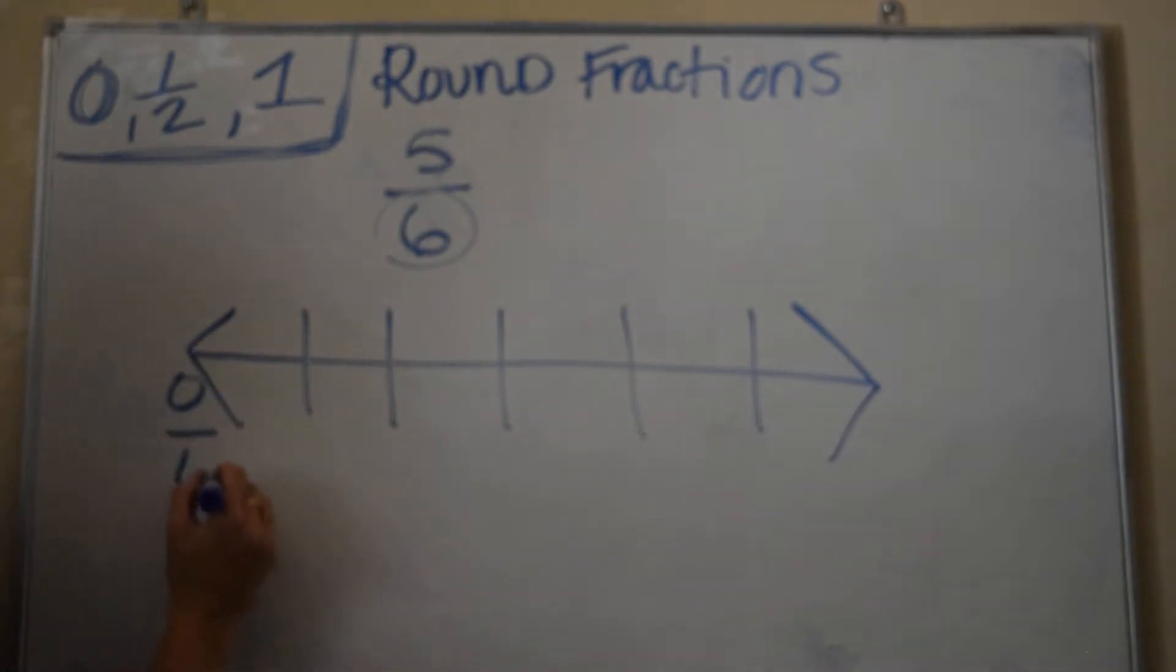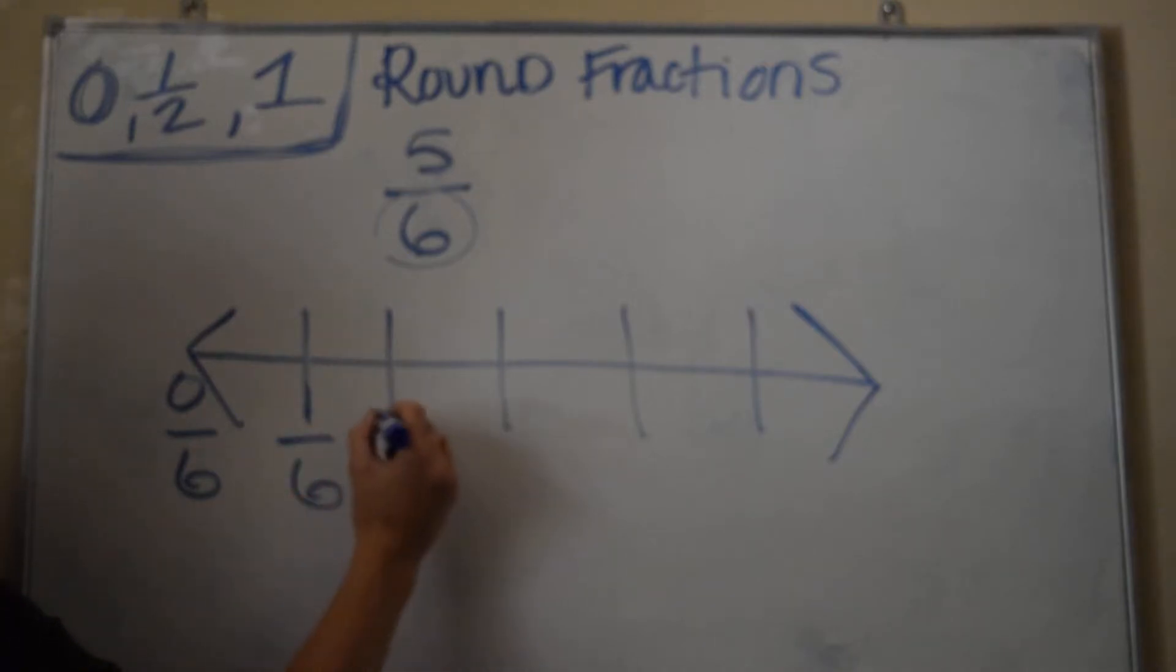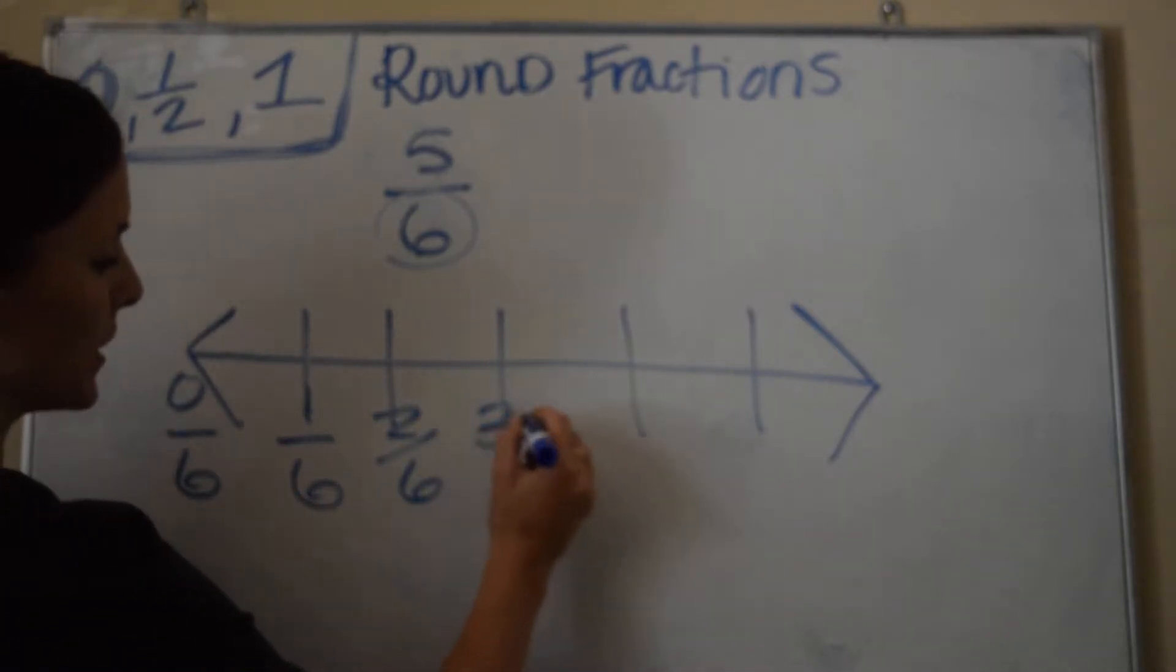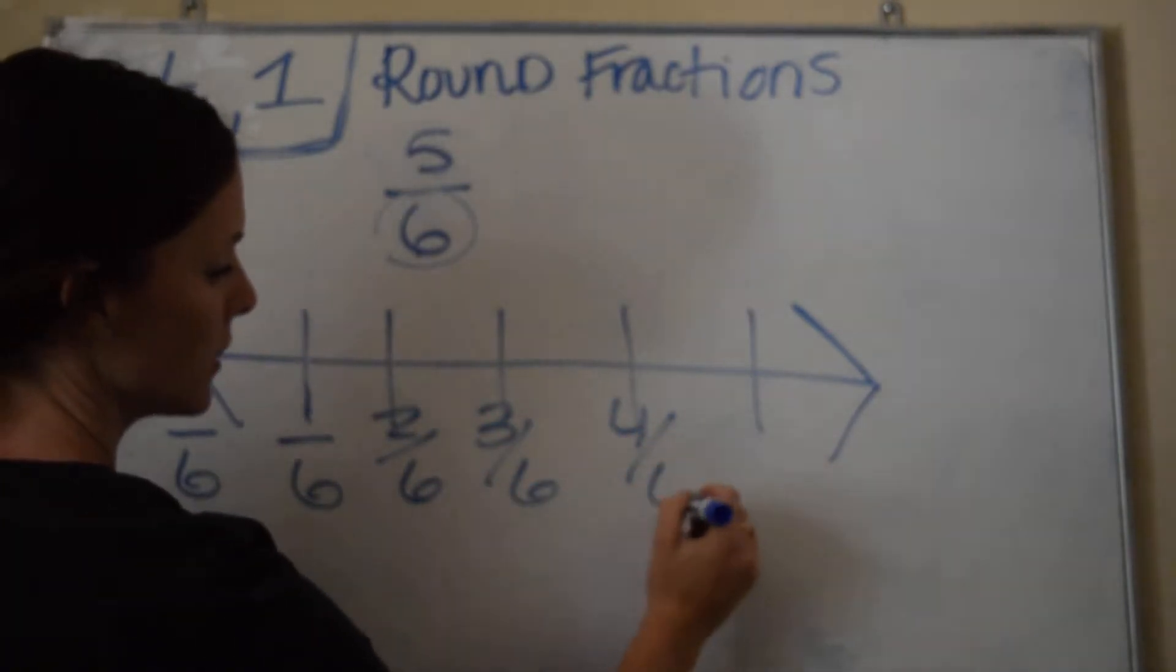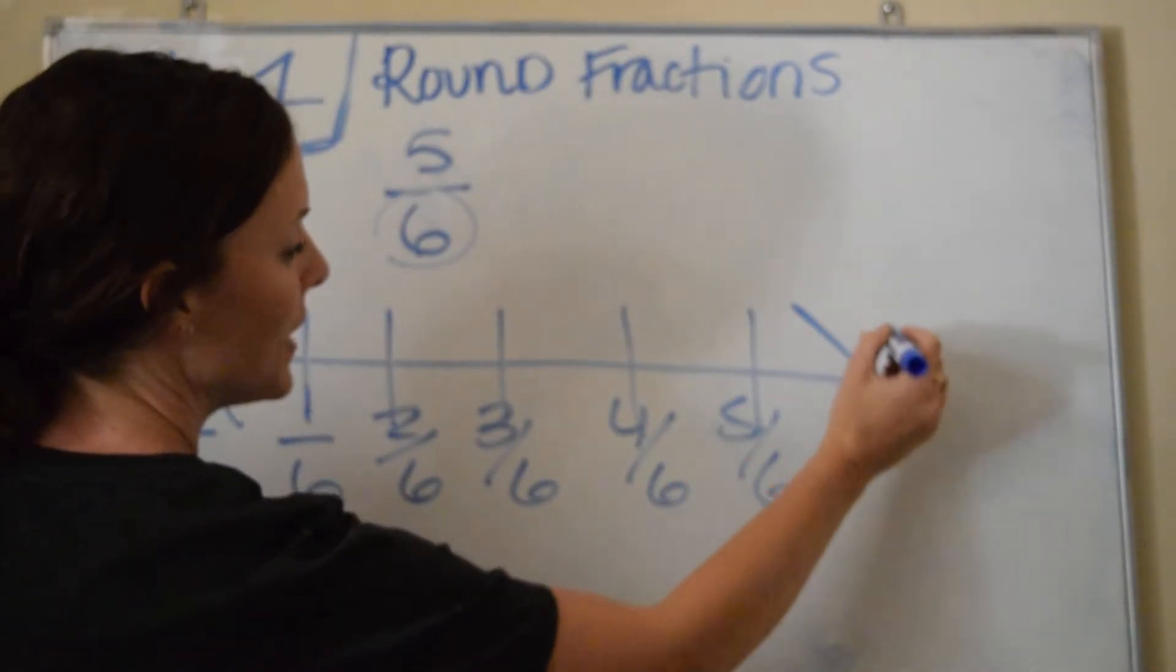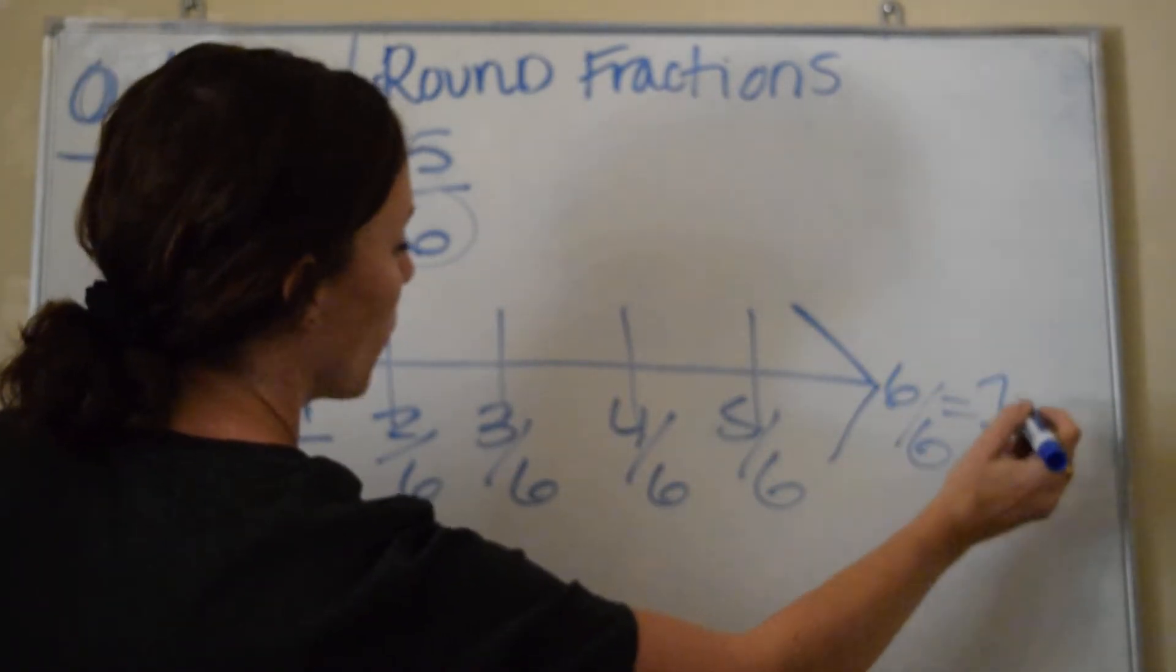So this would be 0/6, this would be 1/6, 2/6, 3/6, 4/6, 5/6. And the end is 6 out of 6, which also means one whole.